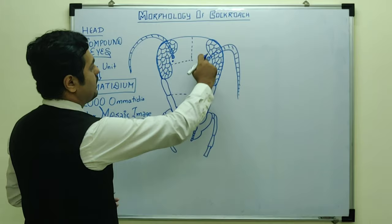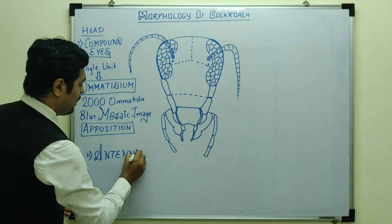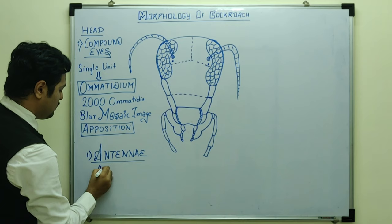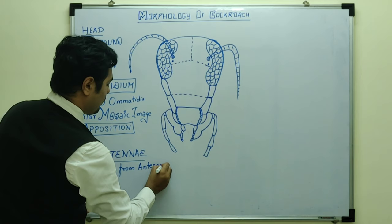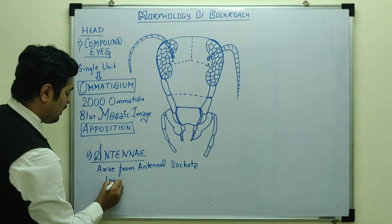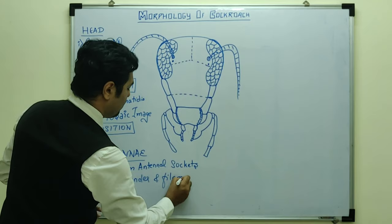The second structure on the head is the antenna. Antennae arise from antennal sockets and are long, slender, and filamentous. The shape of the compound eye, if asked, is kidney-shaped.